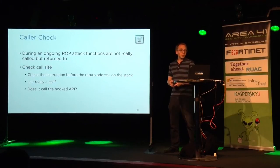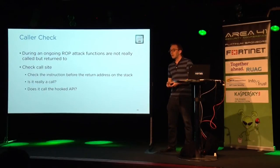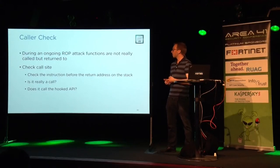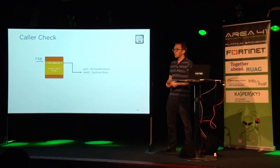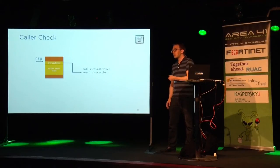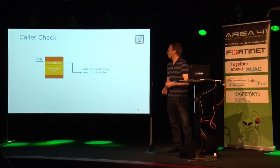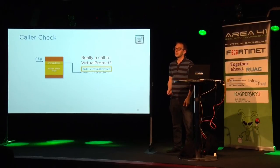The next mitigation is caller checks. During an ongoing ROP attack, functions are not called but rather returned into. EMET checks the call site to see if there is actually a call instruction. It checks the top of the stack, reads the return address, follows it, and checks the previous function — whether this is a valid call to the hooked function, verifying it's really a VirtualProtect call.